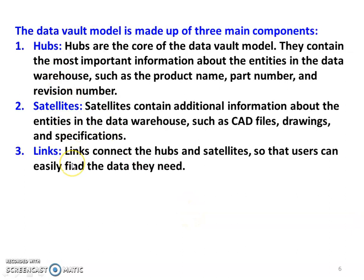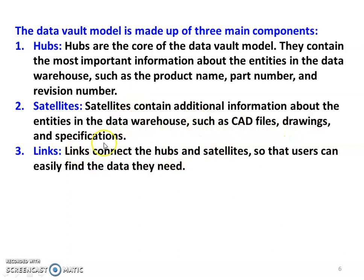There are three major components of the data vault model: hub, satellite, and link. Hubs are the core of the data vault model; they contain the most important information about the entities in the data warehouse, such as product name, part number, and revision number. Satellites contain additional information about the entities, such as CAD file, drawing, and specifications.